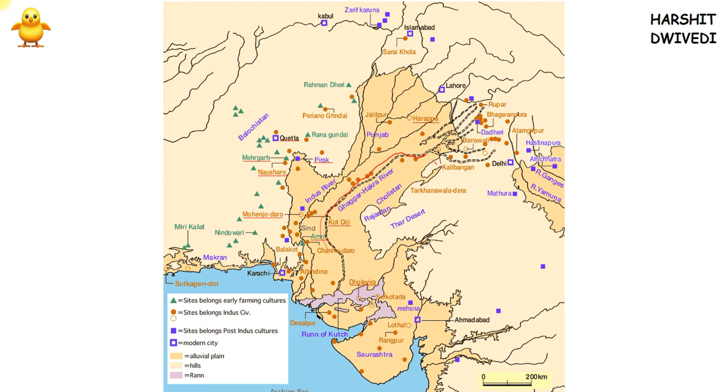Slight portions of the present Ghaggar-Hakra River are still flowing in India and Pakistan, but its current course is very different from the course during Indus Valley civilization times. The Saraswati was a very major river when the Indus Valley civilization was flourishing, but that river has now disappeared.